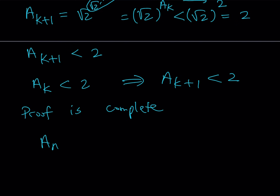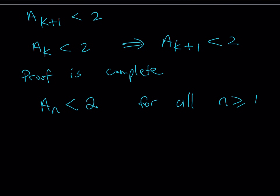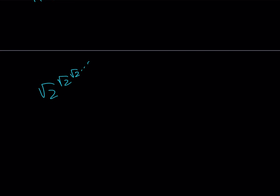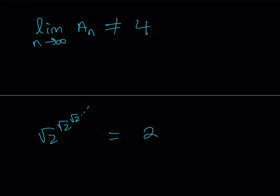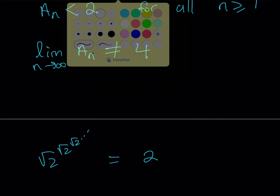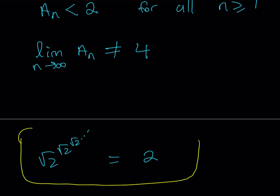So aₙ is always less than 2 for all n, where aₙ is n square root of 2s stacked in exponents. This tells us that our expression is less than 2, so when we take the limit as n approaches infinity of aₙ, it cannot equal 4. Therefore it has to be 2. Stacking infinitely many square root of 2s as a power tower equals 2, not 4 — even though both were algebraic candidates.